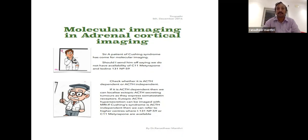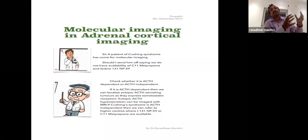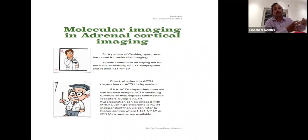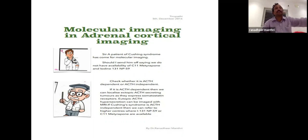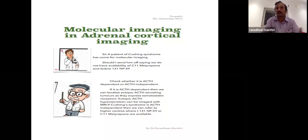If it is ACTH-dependent, we can localize ectopic ACTH-secreting tumors using somatostatin imaging. The bridge between neuroendocrine tumors and the adrenal gland is important — some consider the adrenal part of the neuroendocrine system. However, the adrenal has both cortex and medullary parts; only the adrenal medulla resembles neuroendocrine tumors such as paragangliomas. For adrenal cortical imaging, we use metyrapone, C11-etomidate, and nor-cholesterol I-131 targeting the cholesterol-to-steroid synthesis pathway.